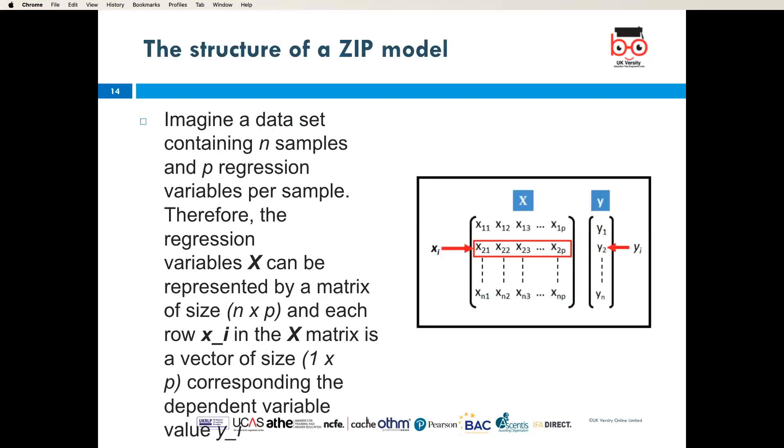The structure of a ZIP model. Imagine a data set containing n samples and p regression variables per sample. Therefore, the regression variable X can be represented by a matrix of size n and p, and each row X in the X matrix is a vector of size 1 times p corresponding to the dependent variable value y. We have this here.